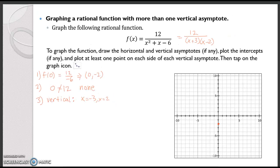Let's go ahead and graph those vertical asymptotes at x equals negative 3 and x equals 2. For the horizontal asymptote, we check the degrees: the degree of the numerator is 0 and the degree of the denominator is 2, so n is less than m, which means we have a horizontal asymptote at y equals 0.